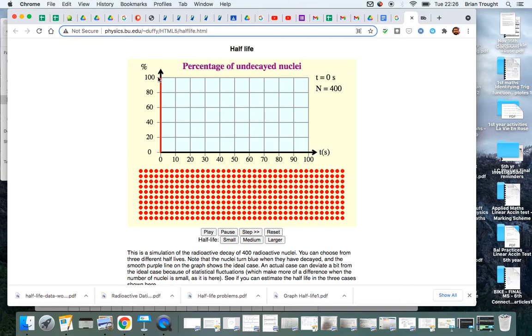and it decays like a radioactive isotope, in that the decay is random, but over a particular time limit, called the half-life, the number of undecayed nuclei will halve. So it will take a certain amount of time for the 100 dots to go to 50, that's one half-life.